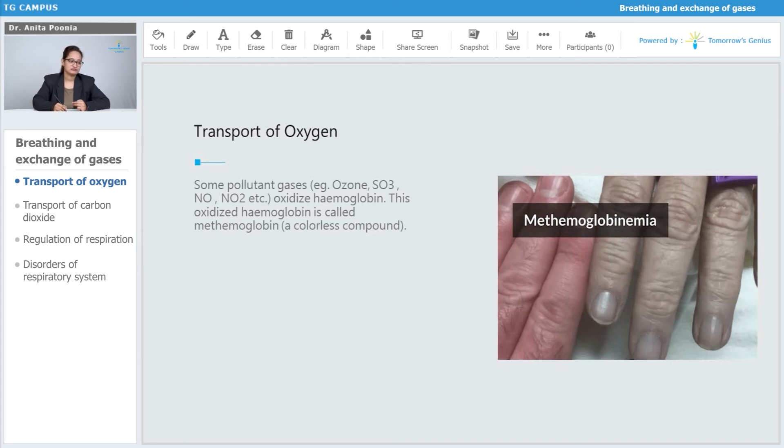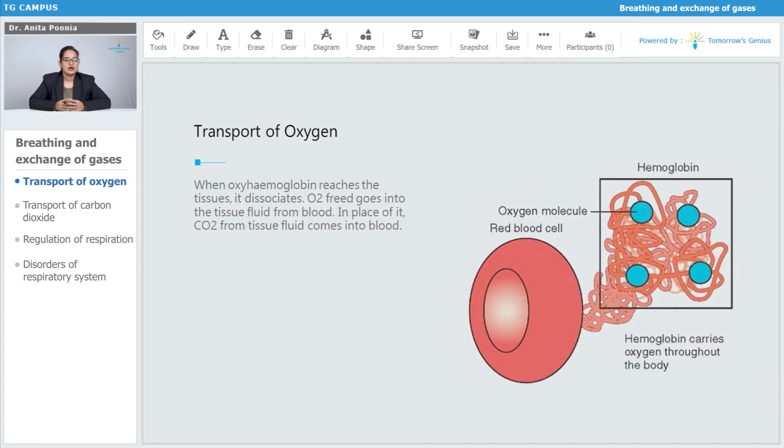When oxyhemoglobin reaches the tissue, it dissociates. The oxygen freed goes into the tissue fluid from the blood, and in place of it, carbon dioxide from the tissue comes into the blood.